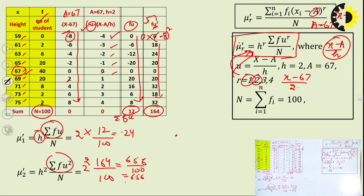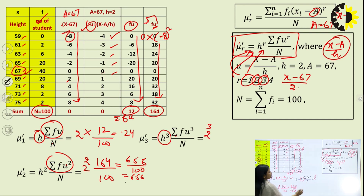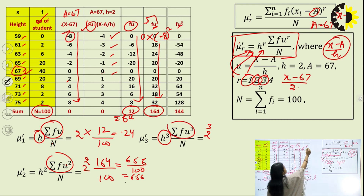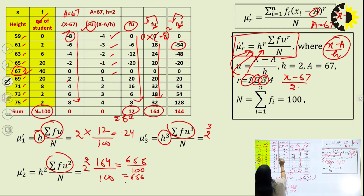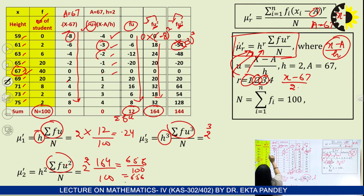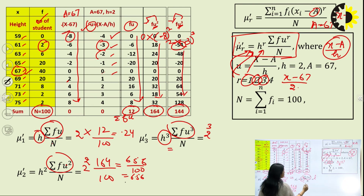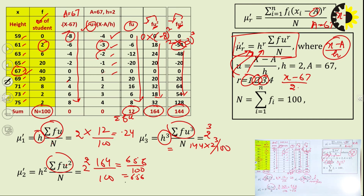For the third moment: mu3 dash equals h³ × summation(fu³) upon n. With h equal to 2, find the cube of u series, multiply by corresponding frequencies. For example, for the second element u equals −3, so (−3)³ × 2 = −54. The sum equals 144. So mu3 dash equals 2³ × 144 upon 100.